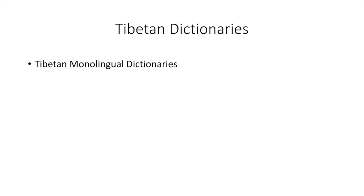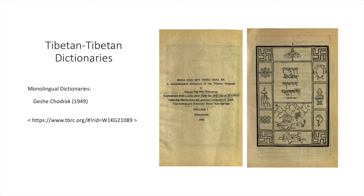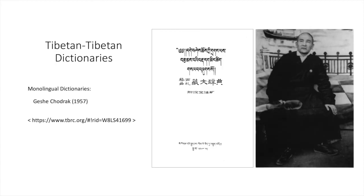There also exist a number of monolingual Tibetan dictionaries, each with their own strengths and weaknesses. As monolingual resources, they are of limited use to students early in their studies, but once your facility with the Tibetan language improves, you can begin to make use of monolingual Tibetan dictionaries, and they can be useful for locating terms not found in bilingual dictionaries. The earliest contemporary monolingual Tibetan dictionary proper was Geshe Chodrak's dictionary, currently available in reproduction of the original 1949 Lhasa edition.